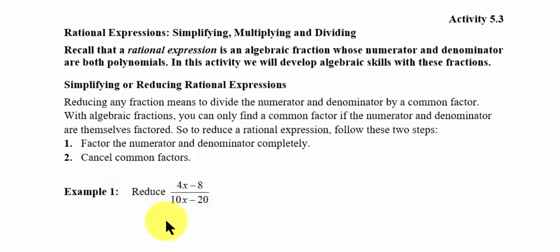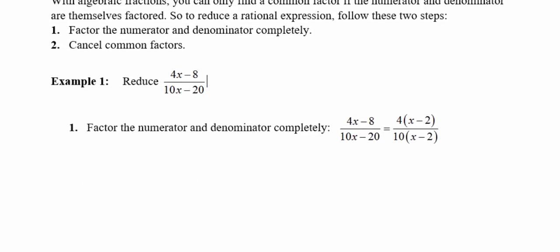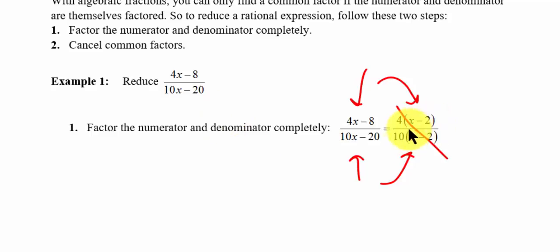Example one: here is the rational expression, and the way to tackle this would be to factor the numerator and then factor the denominator. So they've done that for us down here. You'll notice the 4x minus 8 factors to 4 times the quantity of x minus 2, and the 10x minus 20 factors to 10 times the quantity of x minus 2. Now we can cancel terms — the x minus 2 — we can cancel that and we're going to be left with just 4 over 10.